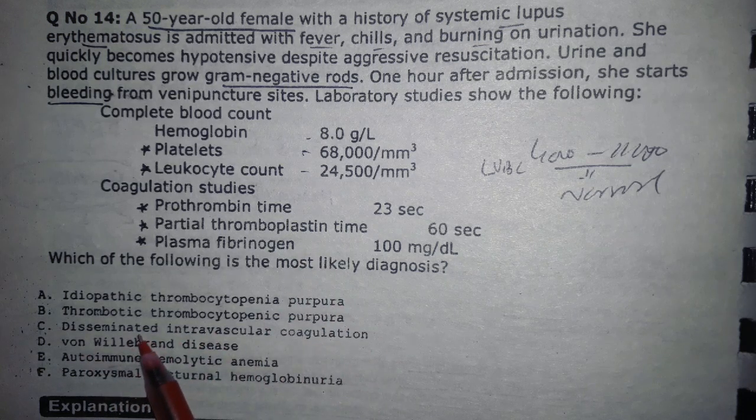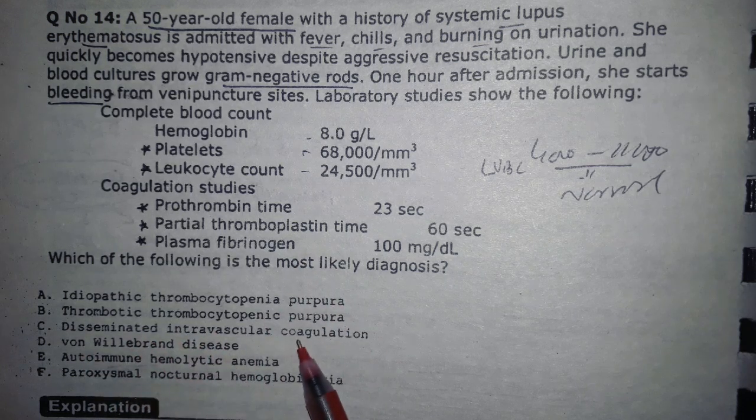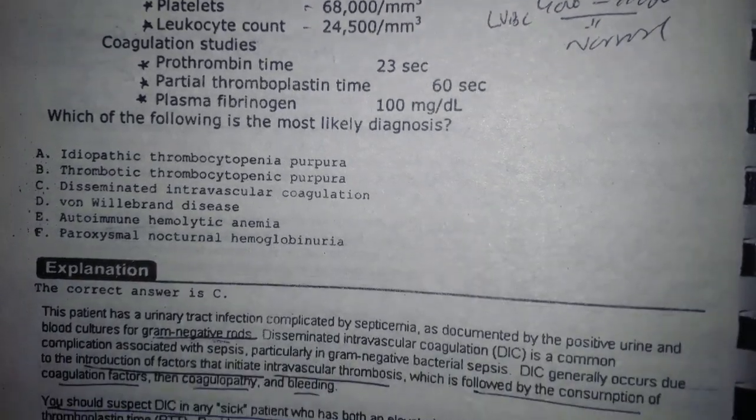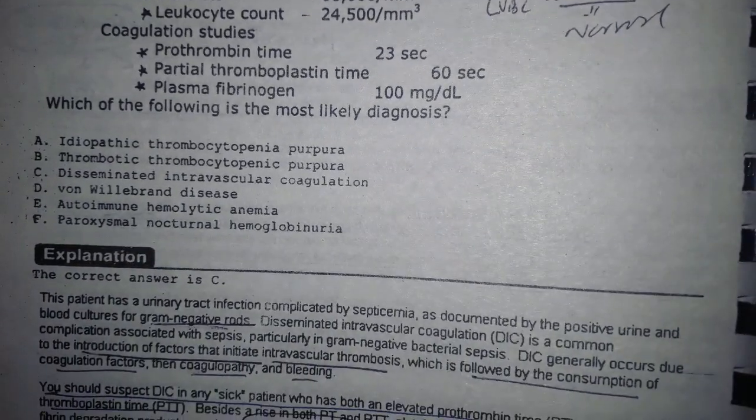Given all these findings — sepsis, bleeding, thrombocytopenia, leukocytosis, increased PT and PTT, and decreased fibrinogen — the most likely diagnosis is DIC: disseminated intravascular coagulation. The answer is C.